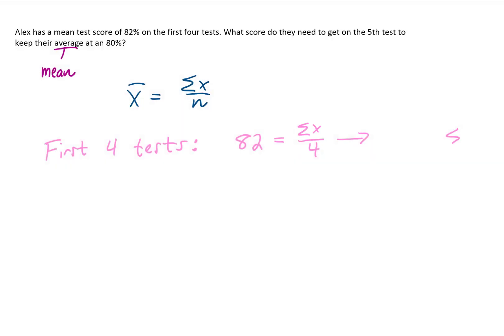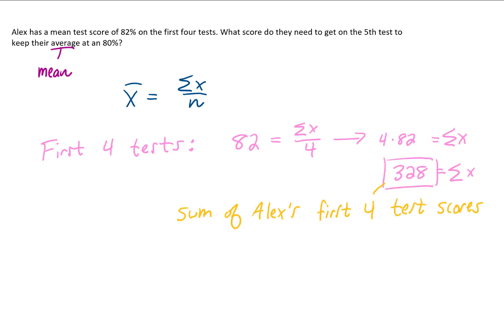We can solve for that sum the same way we did in the previous problem: multiply both sides of the equation by 4. That gives us that Alex's sum on the first 4 test scores was 328. That's good information, because we need to calculate Alex's mean after 5 tests.